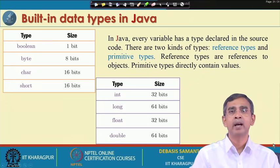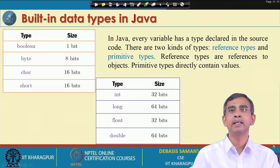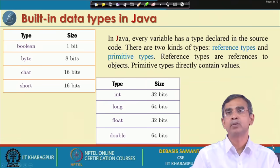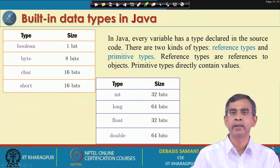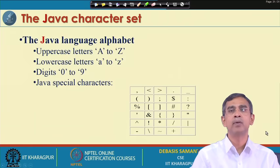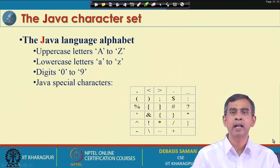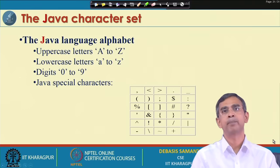Other than built-in data types, there is the reference data type, which is more interesting to learn. The reference data type allows you to define your own data type — as I said, an object is also one type of data. It is also called the abstract data type or customer-defined data type. We will discuss reference data types in detail in this course — how they can be developed, used, and manipulated.